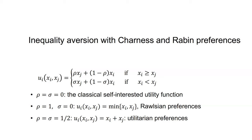If rho equals one and sigma equals zero, the utility of agent I given XI and XJ equals the minimum of XI and XJ — that is, the agent has Rawlsian preferences, whereby the agent seeks the greatest benefit for the least advantaged. And if rho equals sigma equals one-half, the utility of agent I equals simply XI plus XJ — the agent has utilitarian preferences, whereby the agent seeks to maximize total utility.